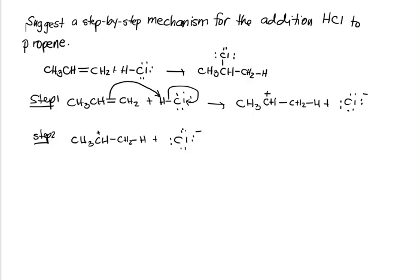So one of the four lone pairs at the chlorine attacks the positive charge on the positively charged carbon, and now we have our chlorinated alkene: CH3CHCl-CH2H.